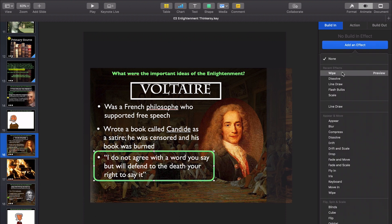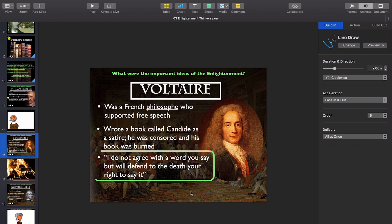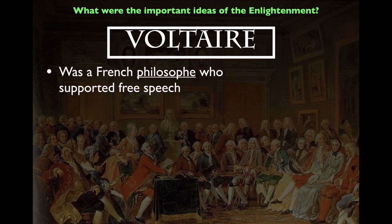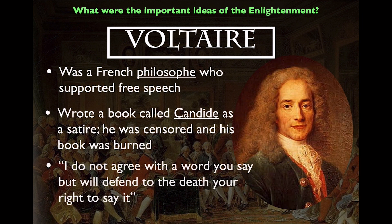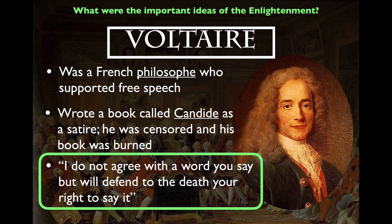And then under animate, we're going to go build in. You could go with wipe. I actually prefer what's called line draw, and line draw will just draw the line. You can do it clockwise or counterclockwise — I think two seconds is a good length. And so when you hit play, you talk about Voltaire, you put the things up on the screen, and then you can bring emphasis to the quote by circling it.